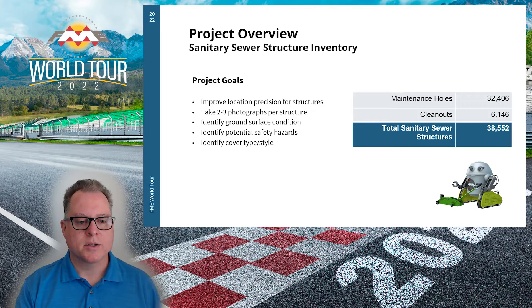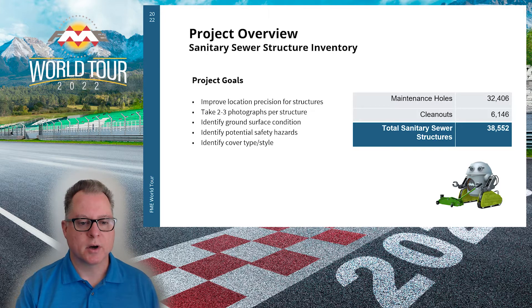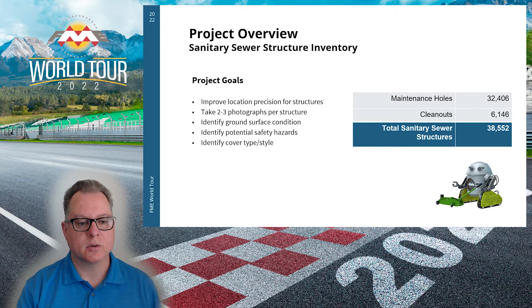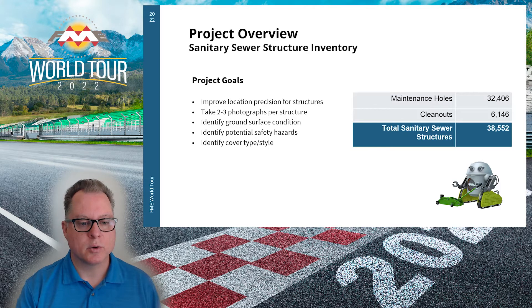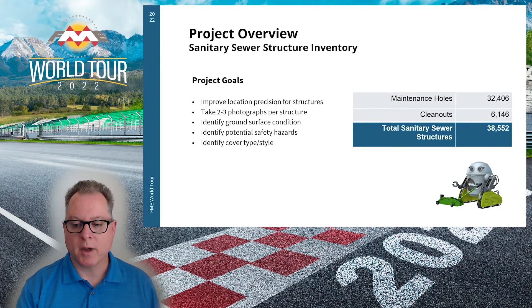We were assigned a project to inspect all of our sanitary sewer access structures. We have a variety of types, and in total we've got almost 39,000 structures. We needed to improve the location precision for these structures in our GIS system. Many structures are concealed under tree canopy, so we cannot use aerial imagery to fine-tune their location. The project involved visiting each structure, taking a close-up photo of the structure cover, and two or three additional photos to help identify location and context. We also needed to capture whether the structure was in bike lanes, pedestrian walking paths, or public or private streets, and identify any potential safety hazards.